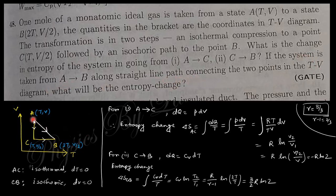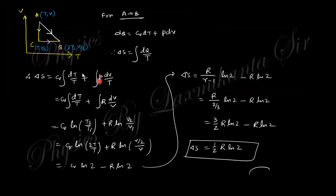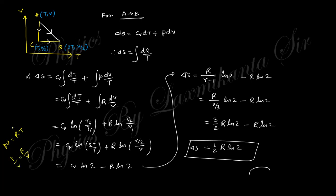If the system goes from A to B along a straight-line path on the T-V diagram, entropy change is ΔS = ∫dQ/T = ∫(Cv dT/T + P dV/T). Since P/T = R/V for an ideal gas, this becomes ∫Cv dT/T + R∫dV/V = (3/2)R ln(T₂/T₁) + R ln(V₂/V₁). Substituting T₂ = 2T, T₁ = T, V₂ = V/2, V₁ = V gives (3/2)R ln 2 − R ln 2 + ... = (1/2)R ln 2.